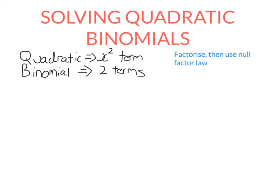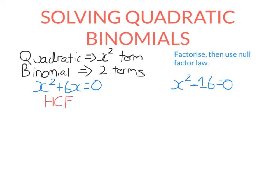Quadratic binomial equations look like this. Here we have an equation — the x squared term makes it a quadratic, and it has two terms, that's why it's a binomial. Quadratic binomials can also look like this, say x squared minus 16 is equal to zero. What makes these a little complicated is the way we factorise — these two require different methods. Highest common factor is used on ones like these, and difference of two squares on ones like these.